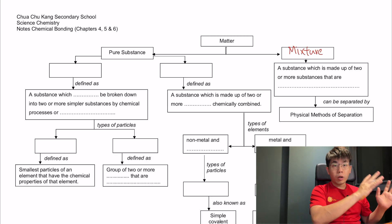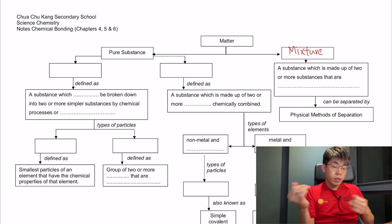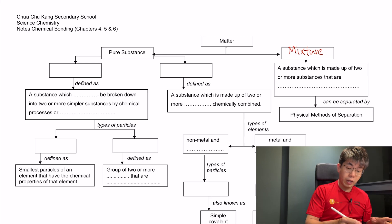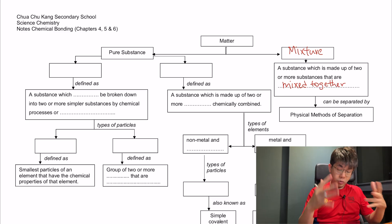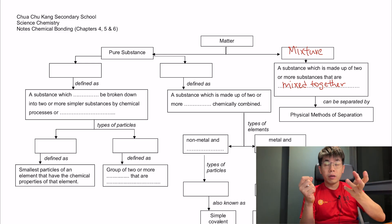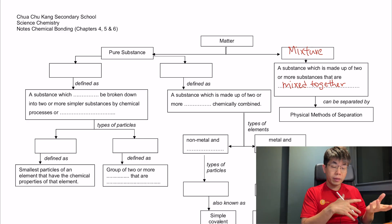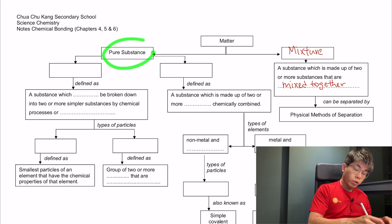Anything that's not pure is always a mixture. A mixture is made out of two or more substances that are mixed together — they are just physically added together. We can separate these mixtures by methods of purification, which is something we learned in chapter one. On the other side, we have our pure substances.